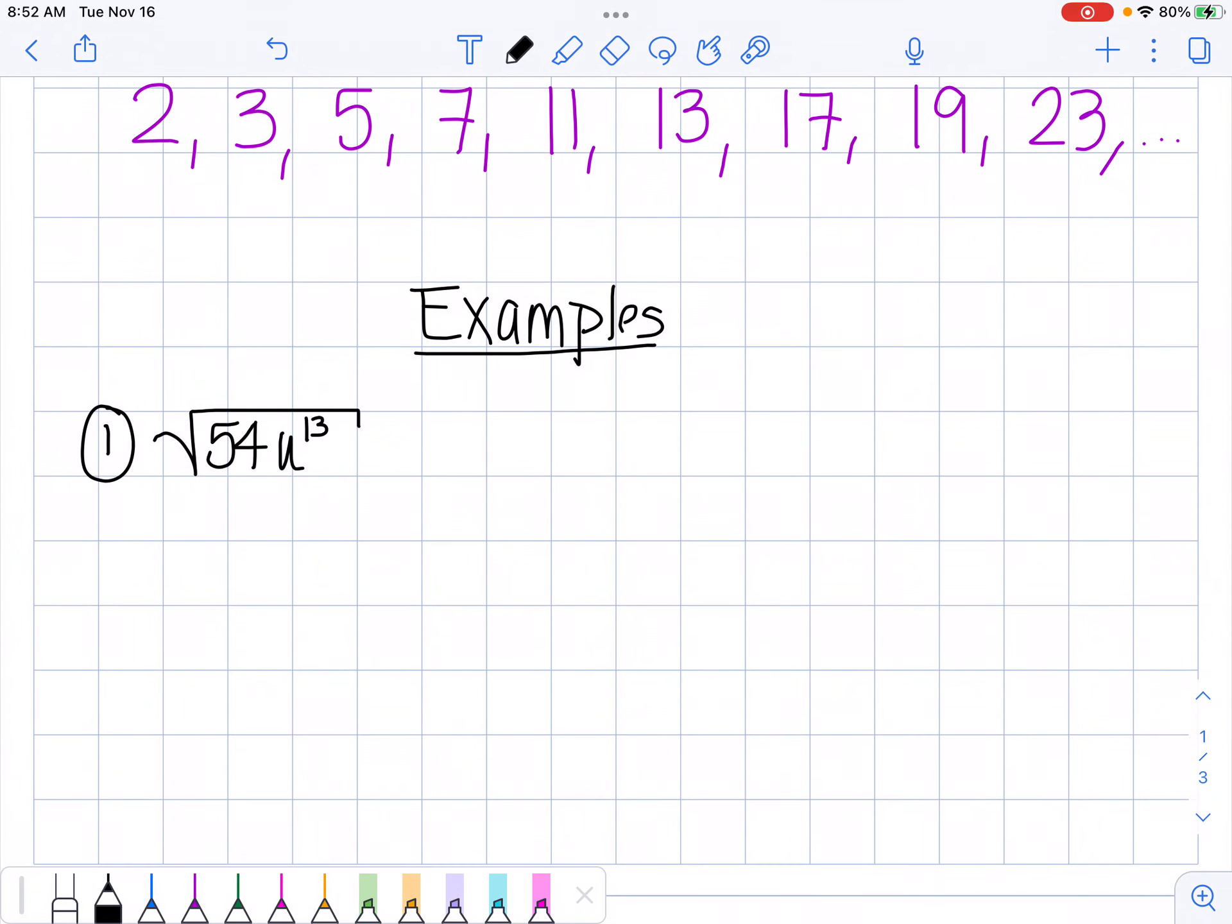When we're doing a factor tree we're going to look at the numbers and the variables individually. When I'm breaking down my number I want to pick any number besides one times 54 that multiplies to 54. So I'm just going to pick 2. 54 divided by 2 gives me 27. Now 2 is a prime number so I underline it so I know that I can't go any farther in that branch of my tree. Give me two numbers that multiply to 27: 9 times 3. 3 is a prime number so I underline that. But I can break down 9, what multiplies to 9? 3 times 3.